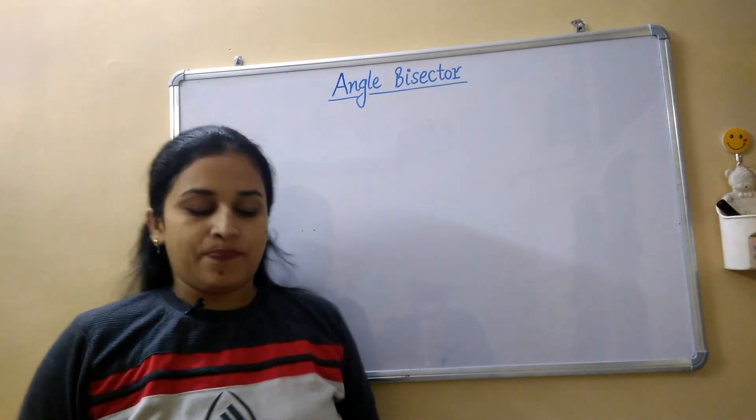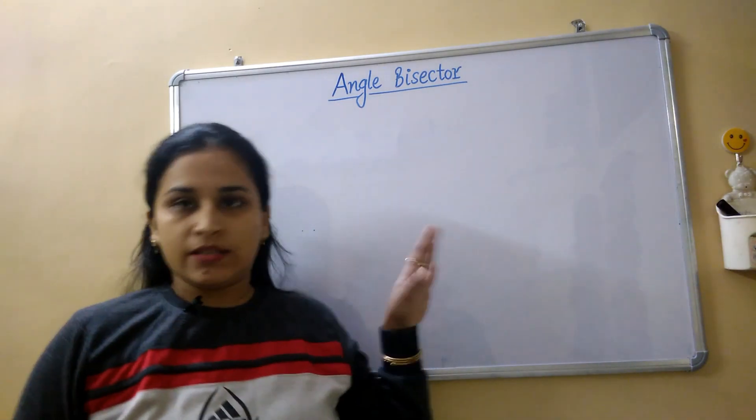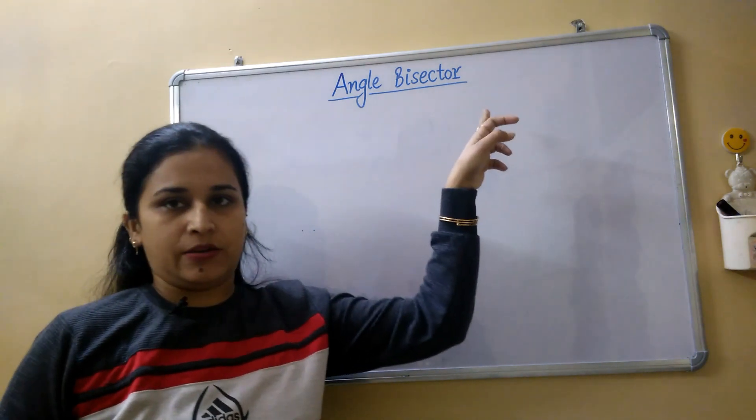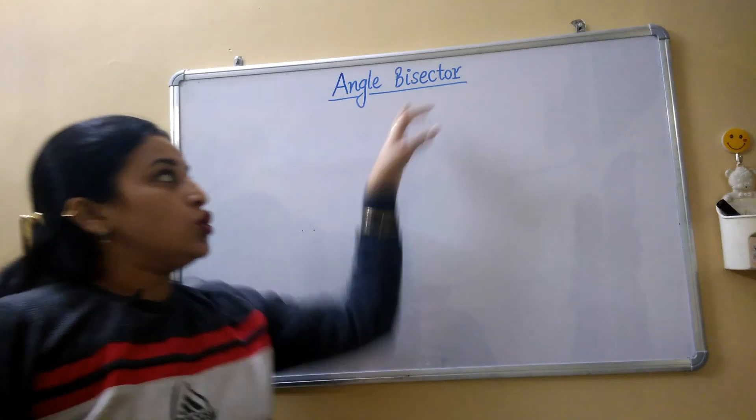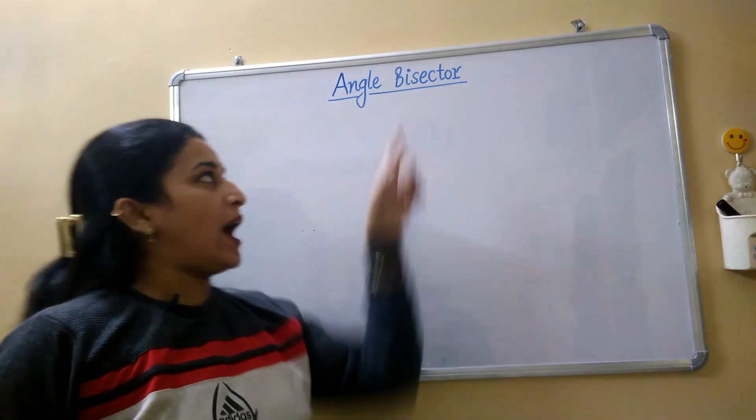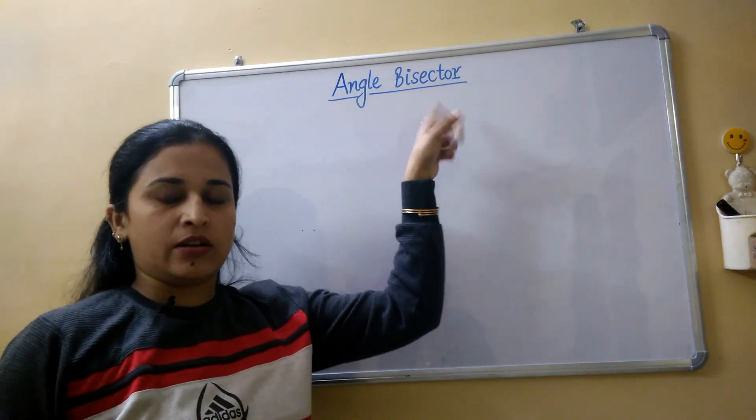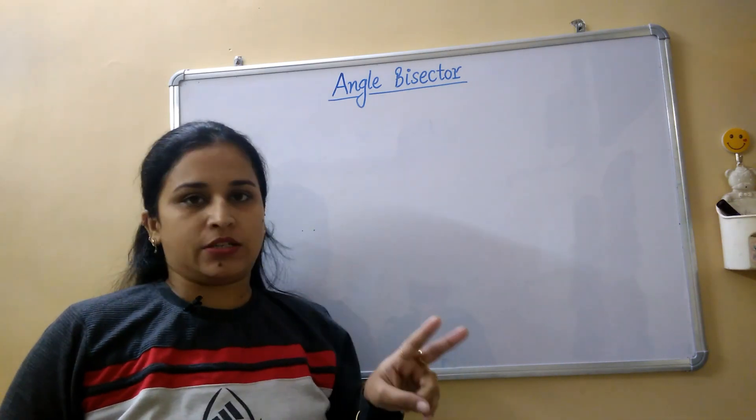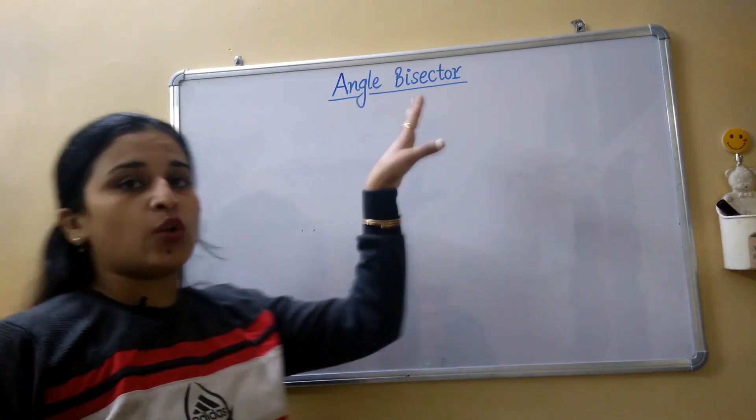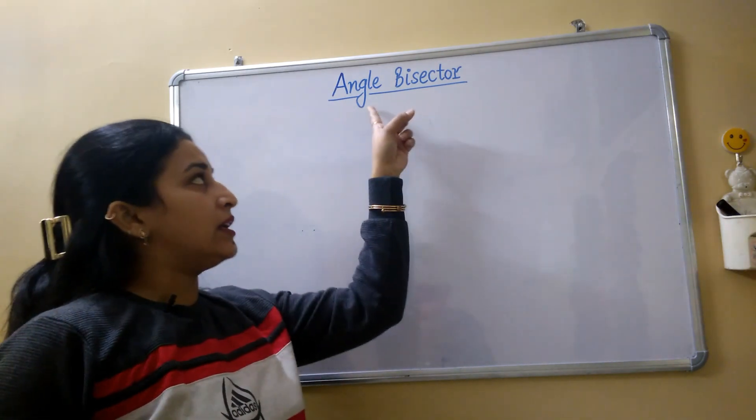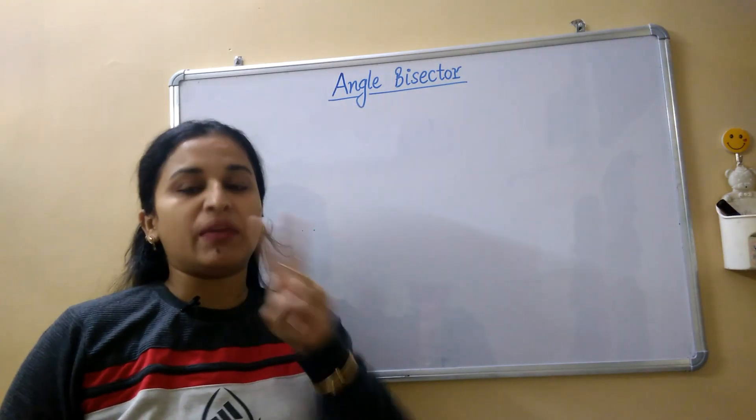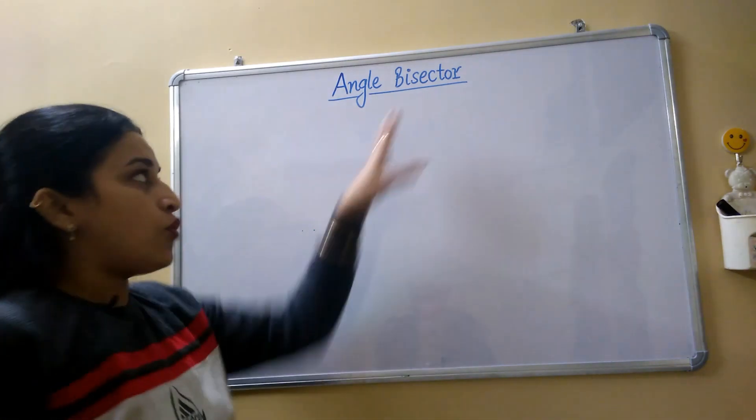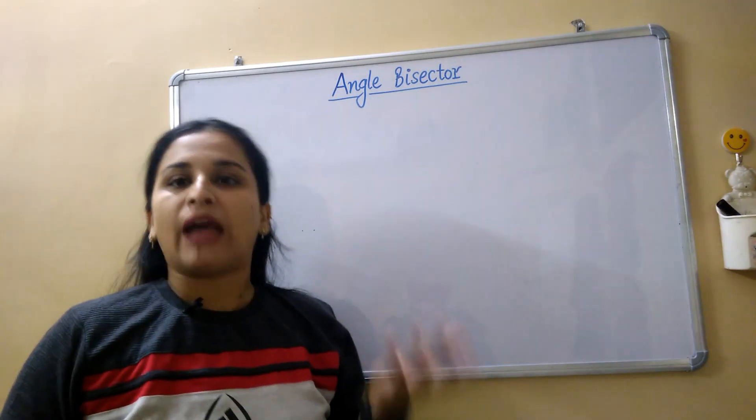Hello my dear kids, in this session we are learning how to construct an angle bisector. You all know that what is the meaning of bisector - which divides anything into two equal parts. So here we are going to divide an angle into two equal parts, means we are going to bisect it.